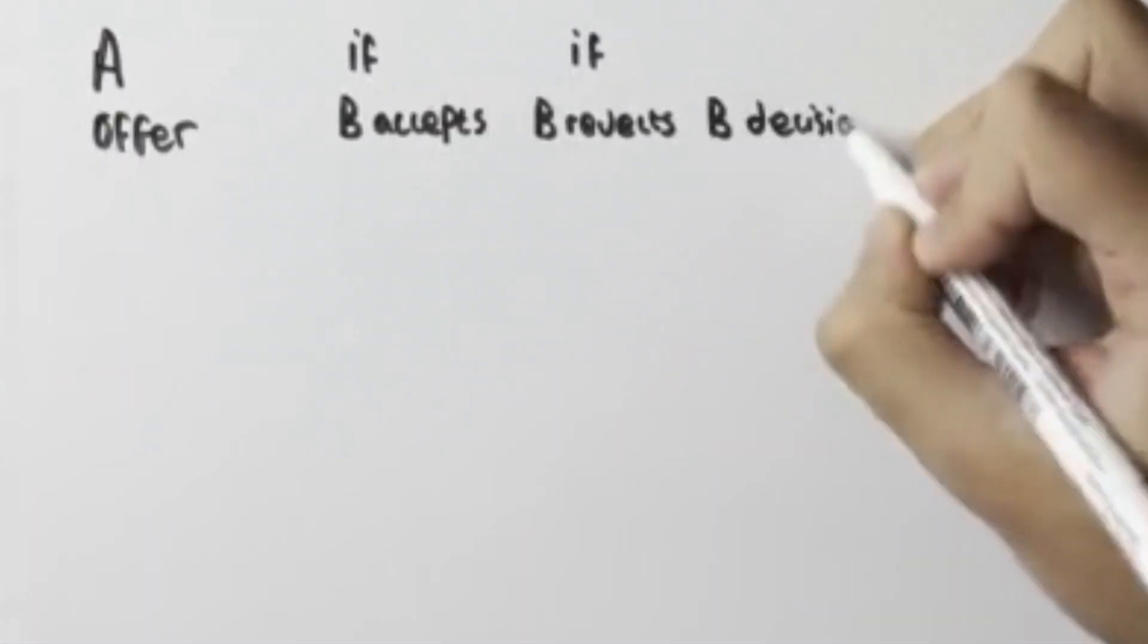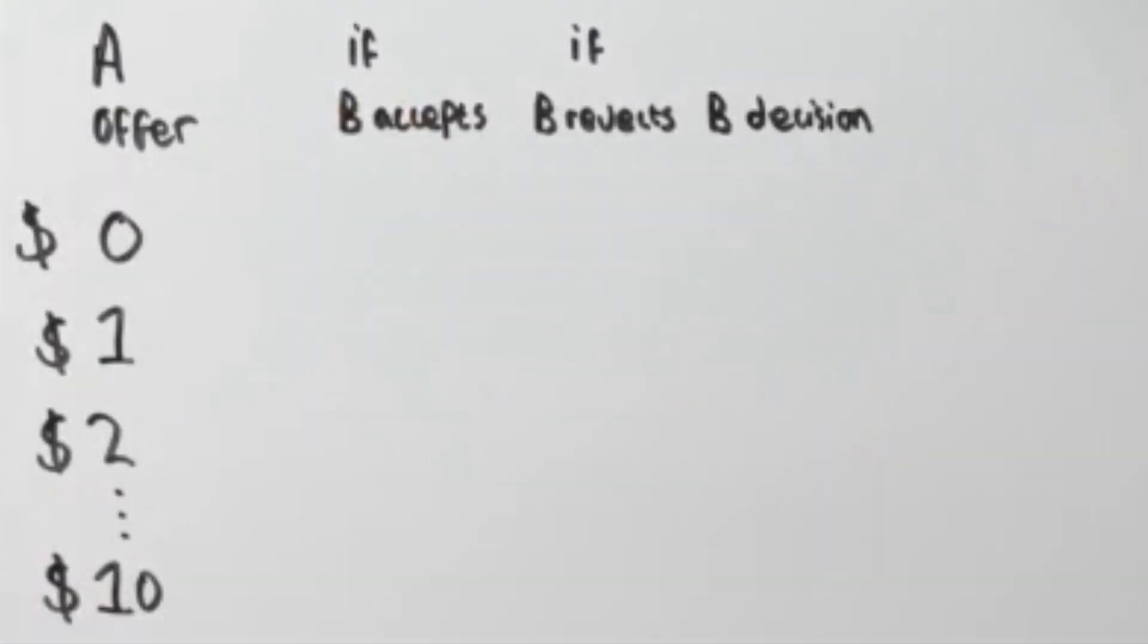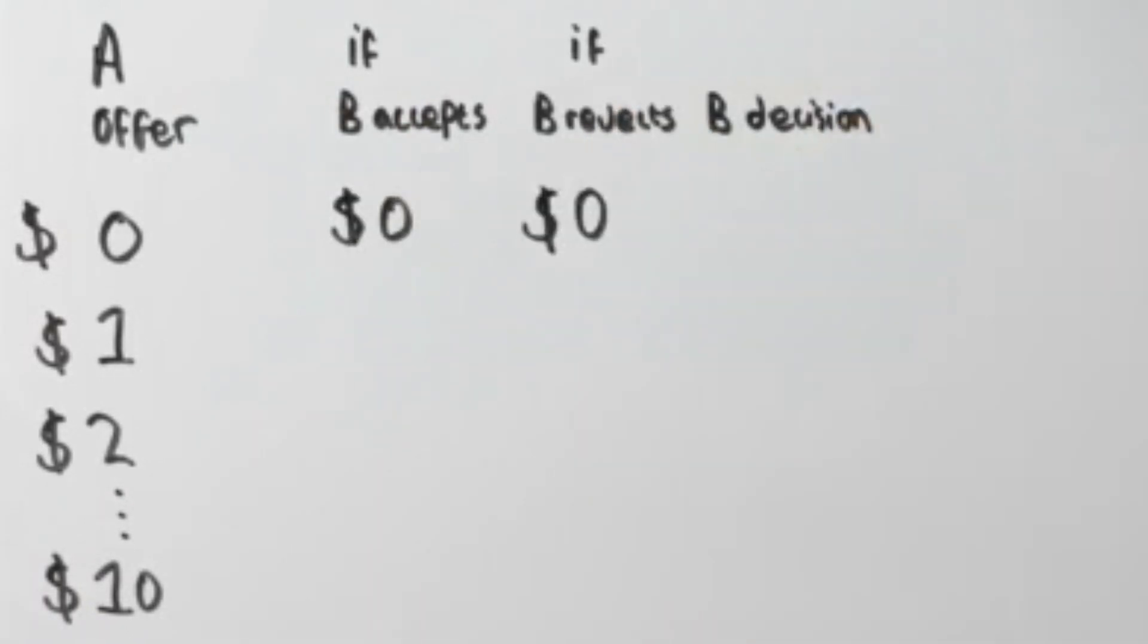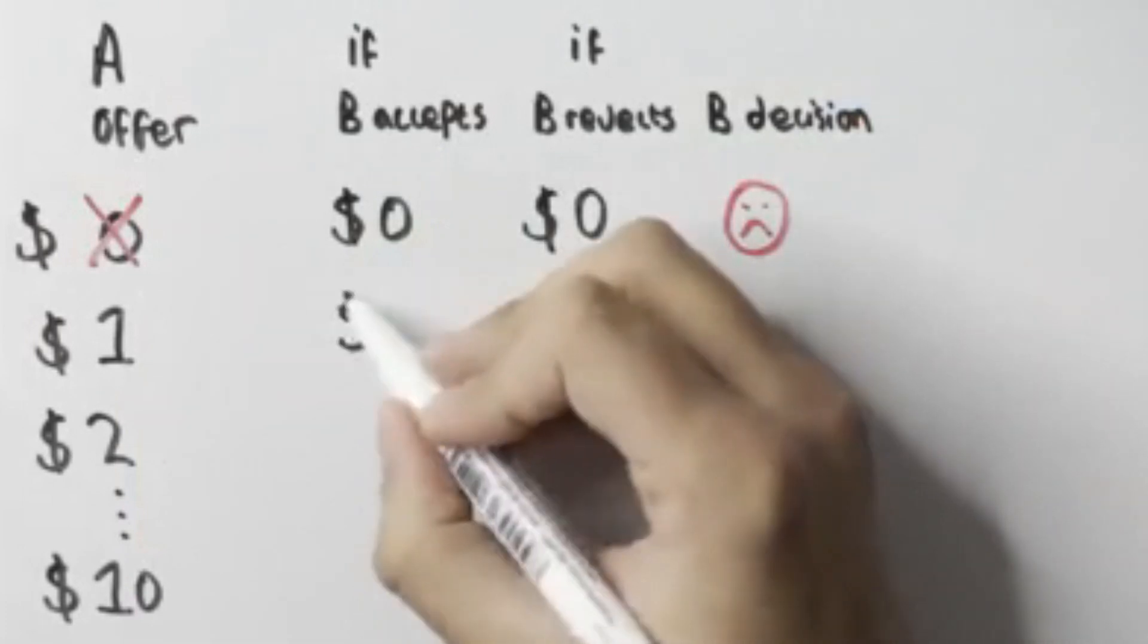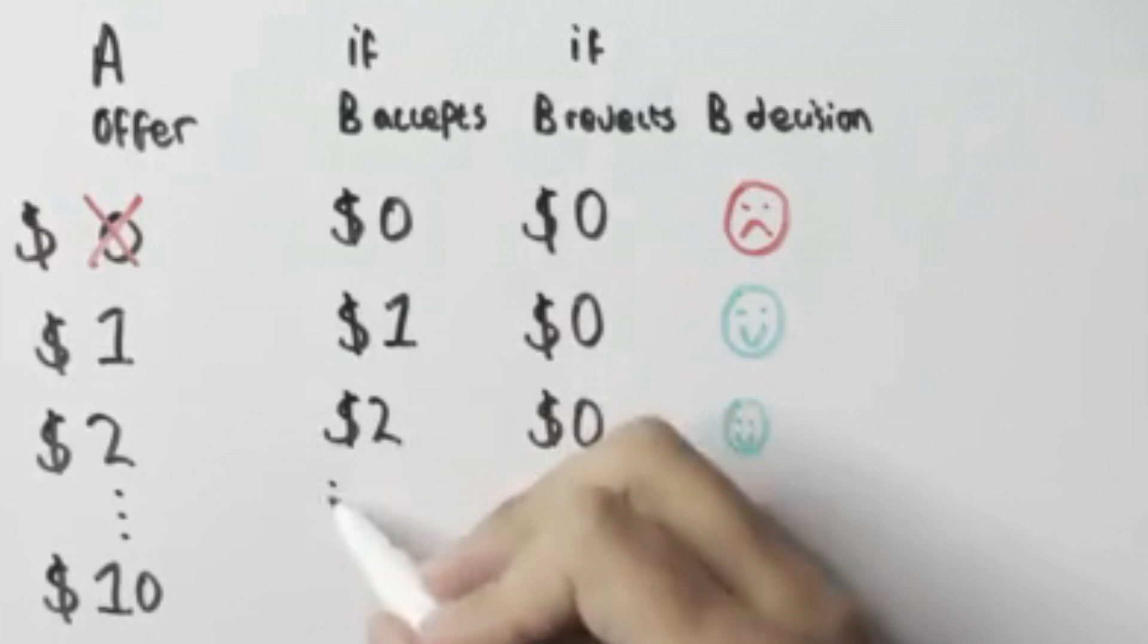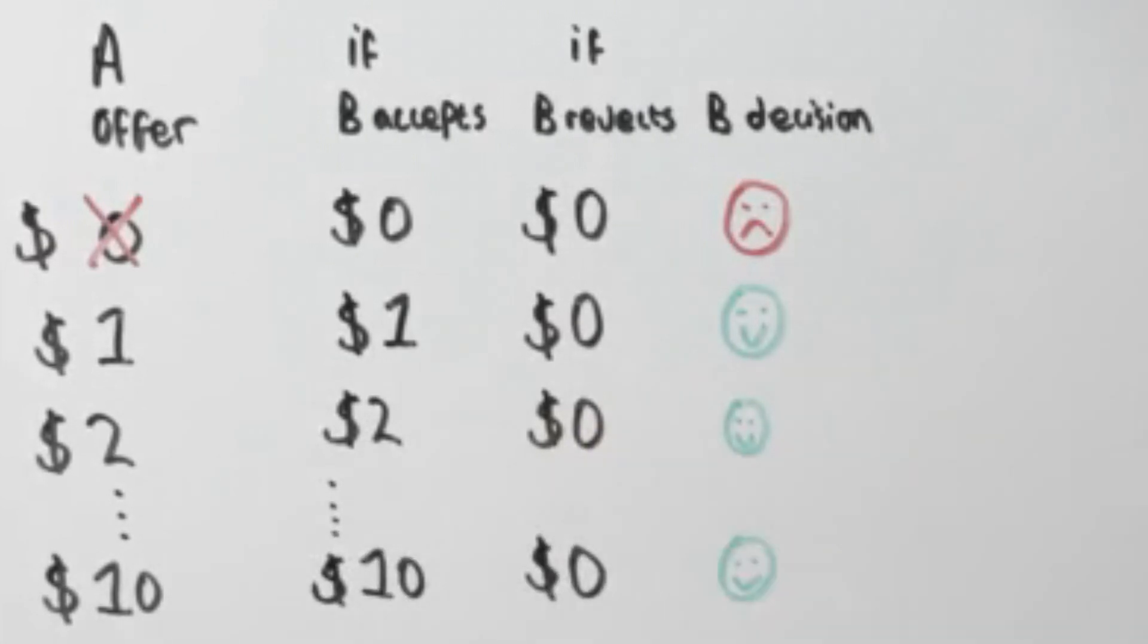Let's look at this from $0 to $10. If you offer him $0 he gains nothing by accepting the offer but he also gains nothing by rejecting the offer, so this isn't a great option. What if you offer him $1? If he accepts it he gets $1 and if he rejects it he gets nothing. So if he's a rational person he should take this offer. The same applies to any offer over $1. He'll be better off taking that offer instead of nothing.